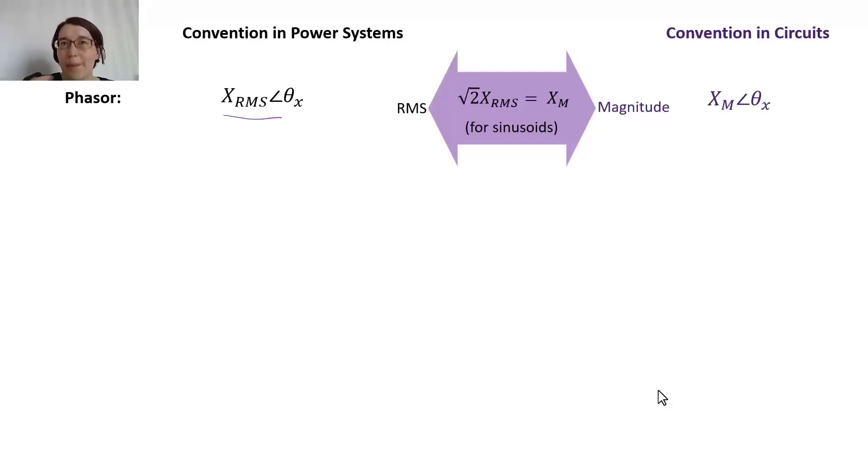Here we're looking at power and instantaneous and average power specifically, but we're looking at how we have slightly different conventions for different fields. Specifically we're talking about power systems and circuits. In power systems we're dealing with AC inputs.